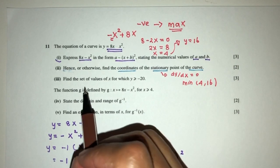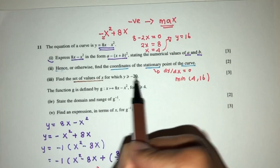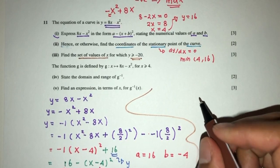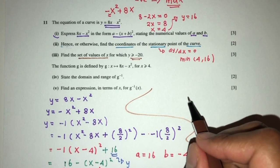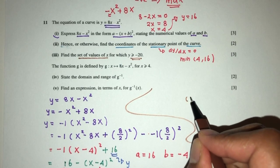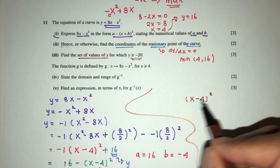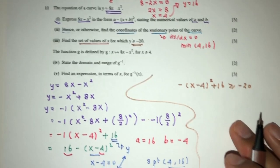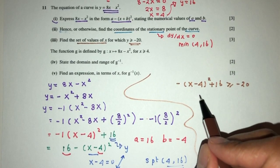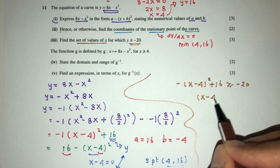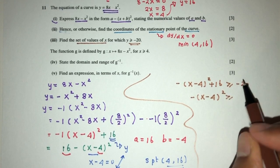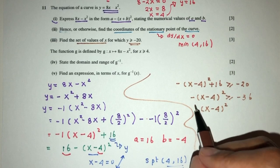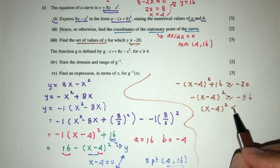For part 3, we need to find the set of values of x for which y is greater than minus 20. Using the completed square form, we write 16 - (x - 4)² > -20. Rearranging, (x - 4)² < 36 — noting that dividing by minus 1 changes the inequality sign.